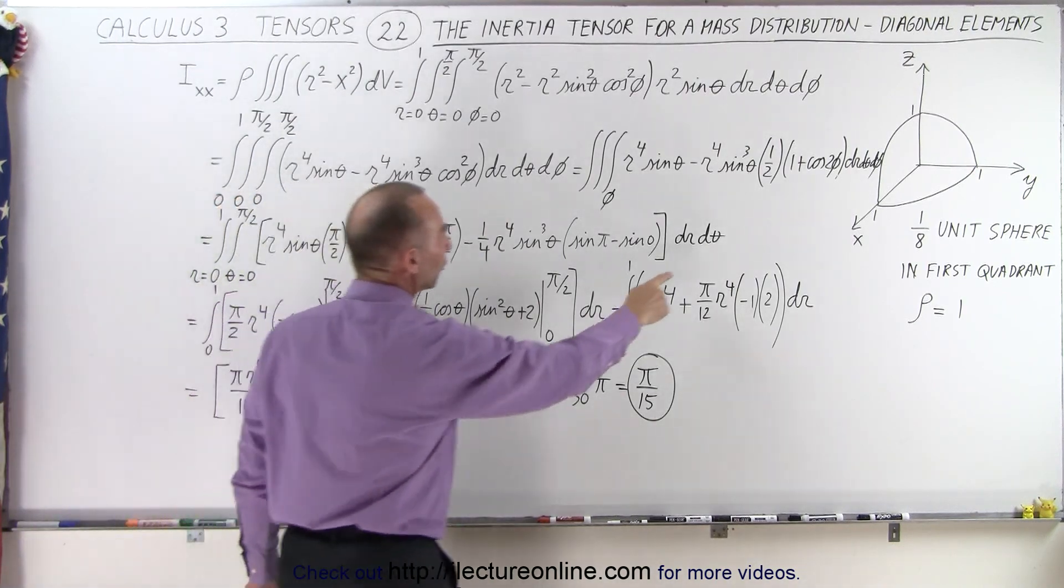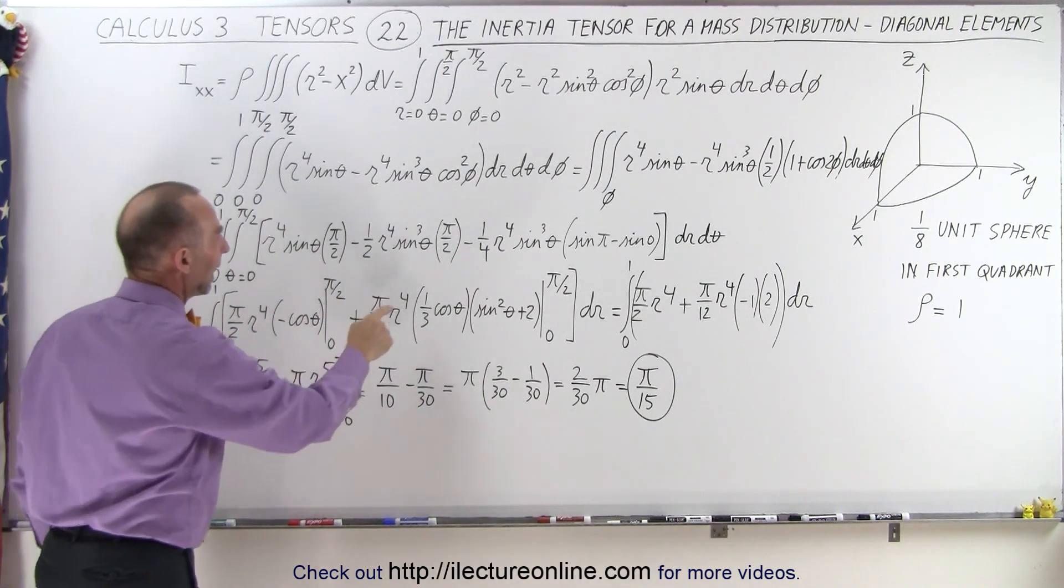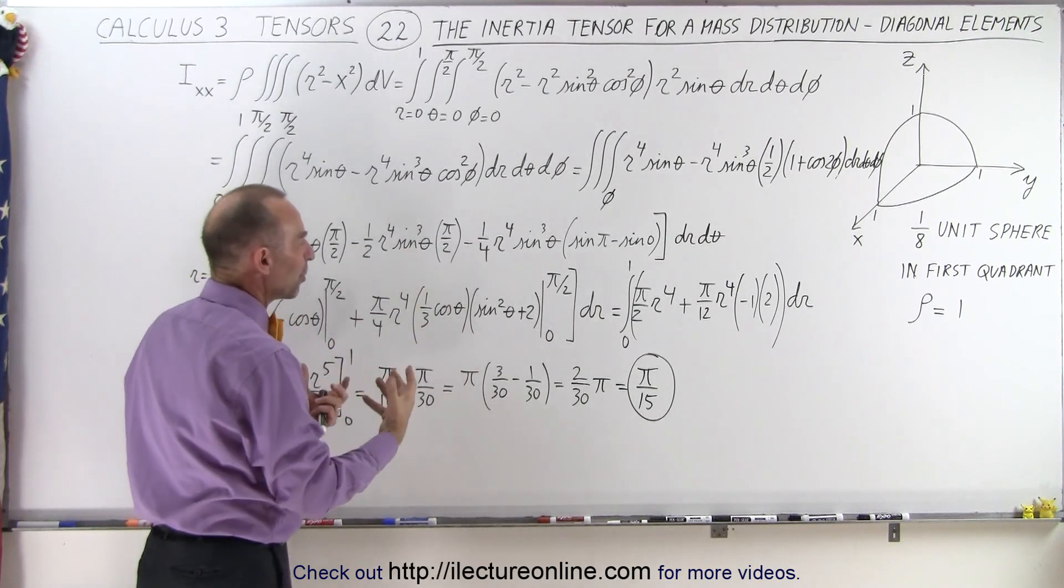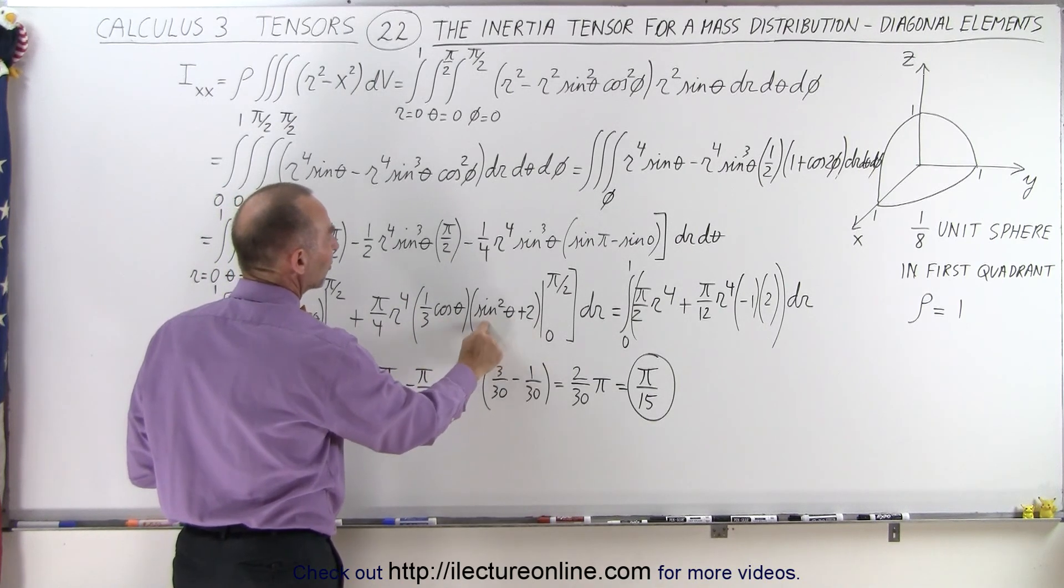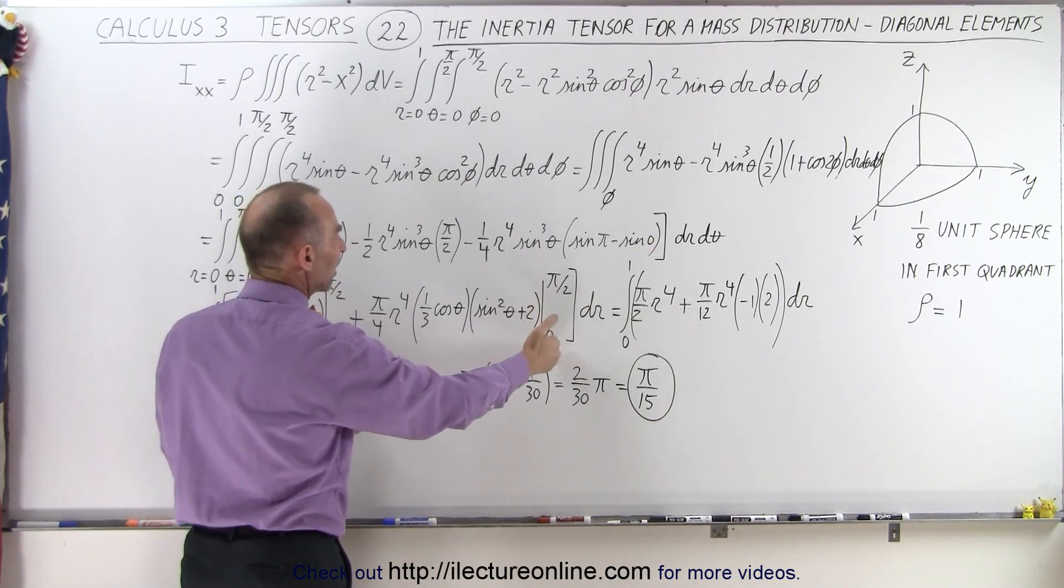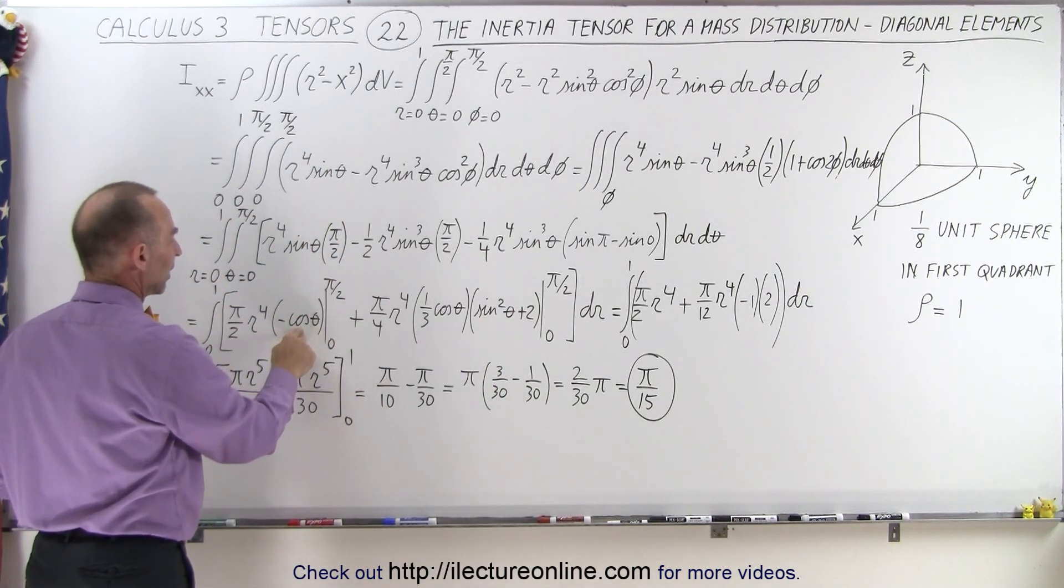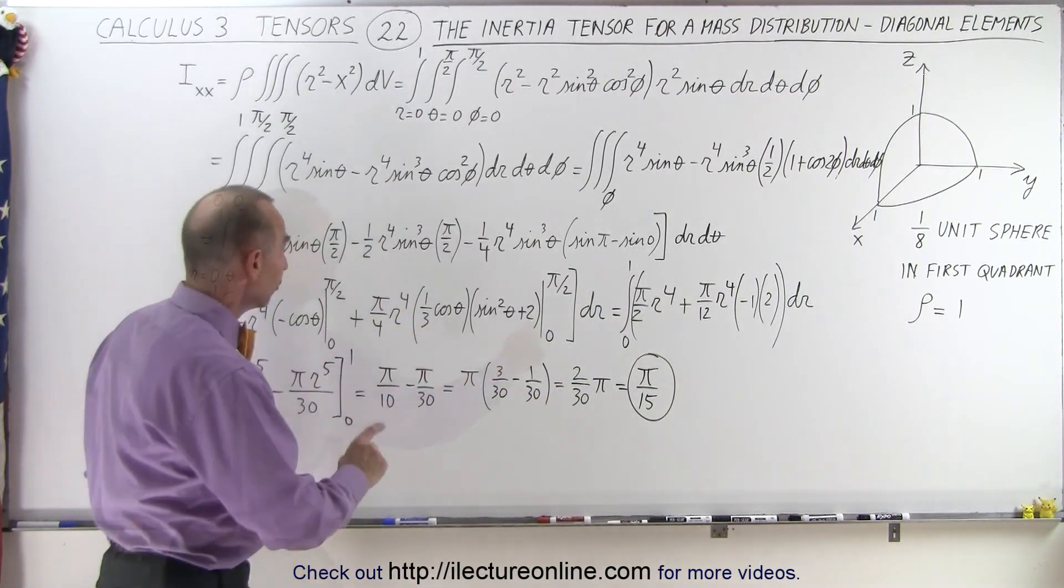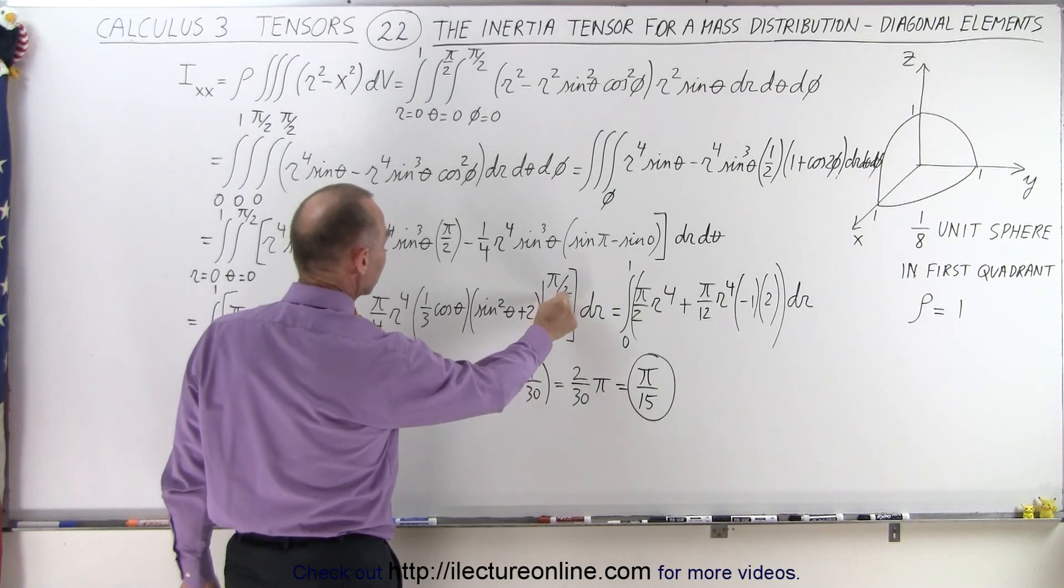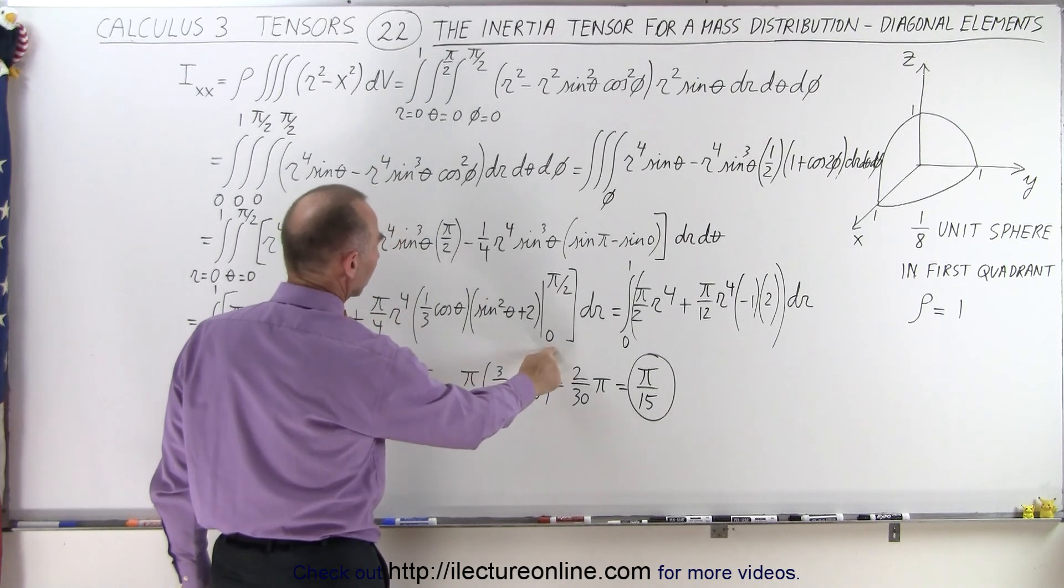So now we're going to integrate over d-theta, and on the first one here, the integral of the sine is the minus cosine, and the integral of the sine cube of theta, that's a little bit more complicated, so that turns out it is one-third the cosine of theta times the quantity sine square of theta plus 2, and then we evaluate that from 0 to pi over 2. When we do that here, when we plug in the upper limit, we get 0. Lower limit, we get minus and minus 1, which is a plus 1, so we end up with pi over 2 times r to the fourth. When I plug in the limits here, when I plug in the upper limit pi over 2, I get a 0, so this whole thing goes to 0.